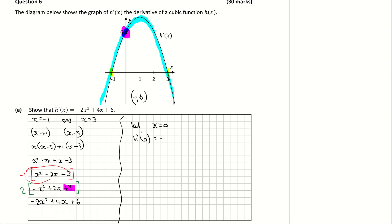So on my derivative, I'm going to find h'(0), which is equal to -2(0)² + 4(0) + 6. And that's giving me 0 plus 6. So that is telling me that h'(0) is equal to 6. And that was my y-intercept as per the diagram. And that is question 6, part A.